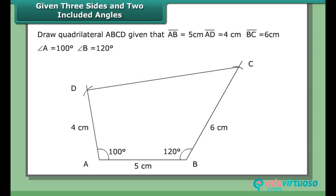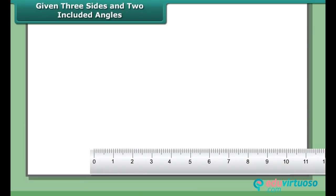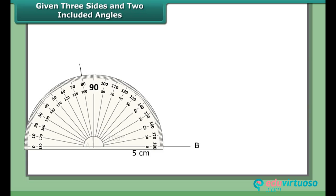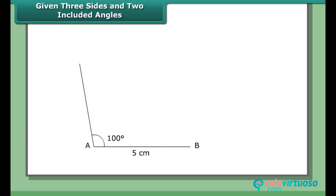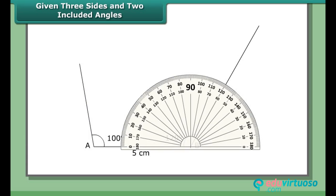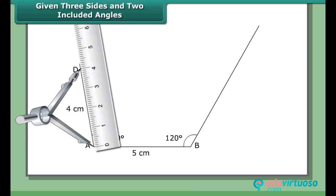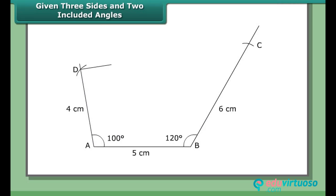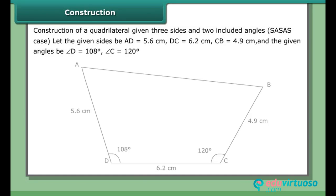Draw quadrilateral ABCD given AB = 5 cm, AD = 4 cm, BC = 6 cm, angle A = 100°, and angle B = 120°. Steps: 1. Draw AB = 5 cm. 2. At A, draw an angle of 100°, and at B, draw an angle of 120°. 3. Mark off AD = 4 cm and BC = 6 cm. 4. Join CD. ABCD is the required quadrilateral.